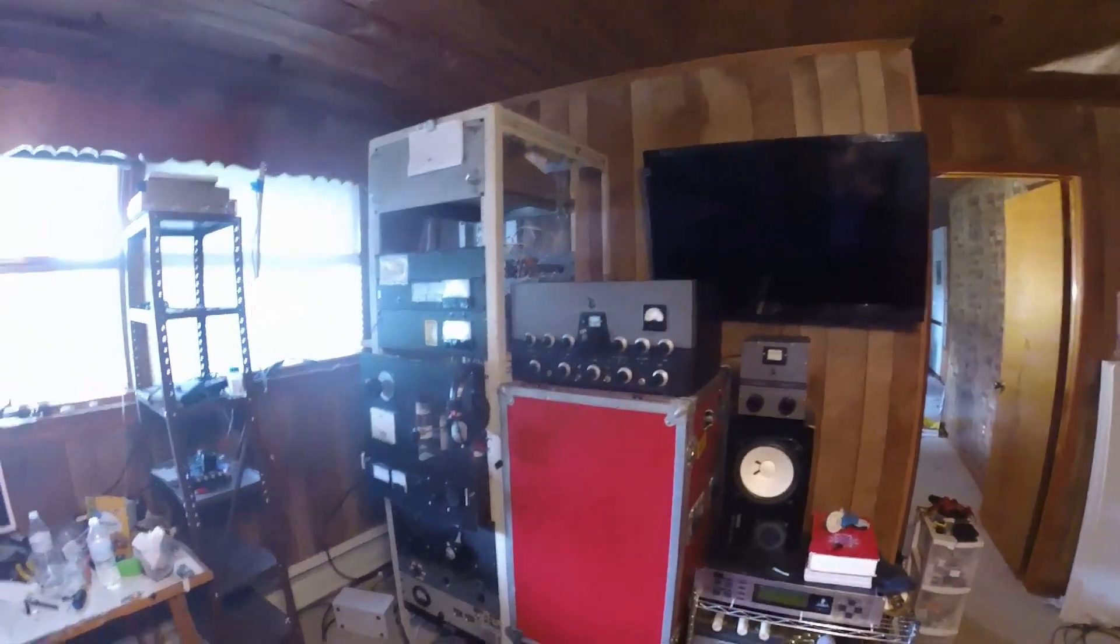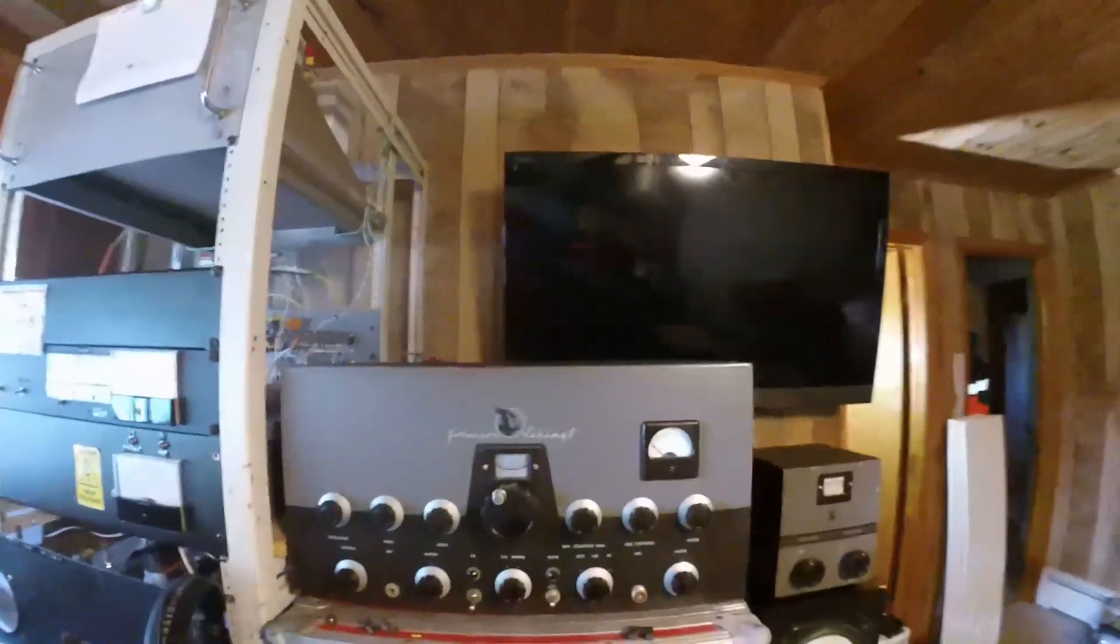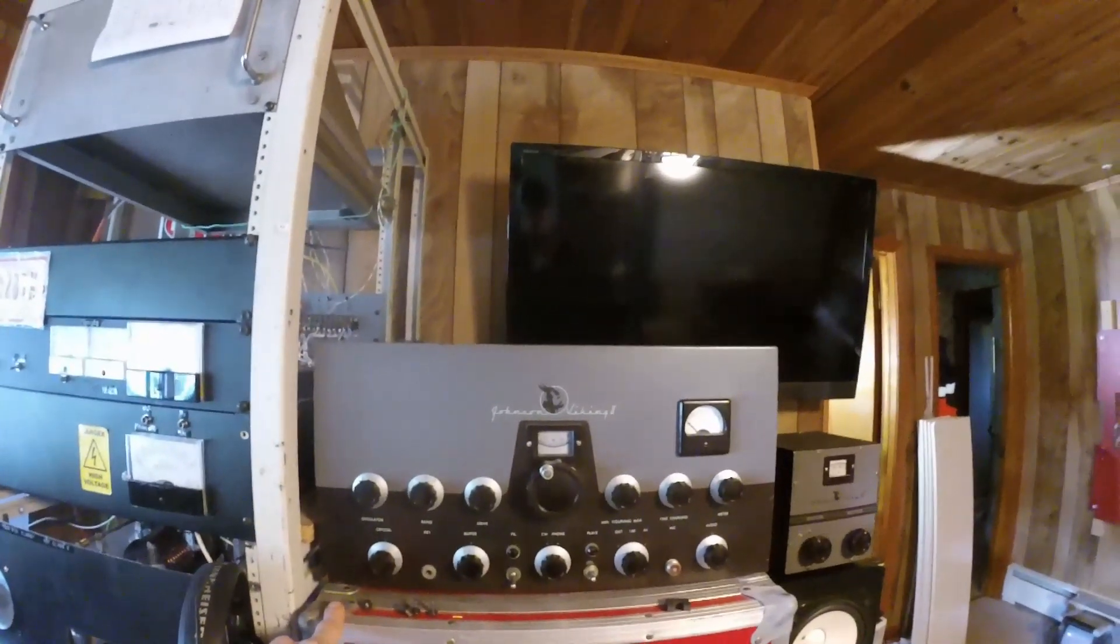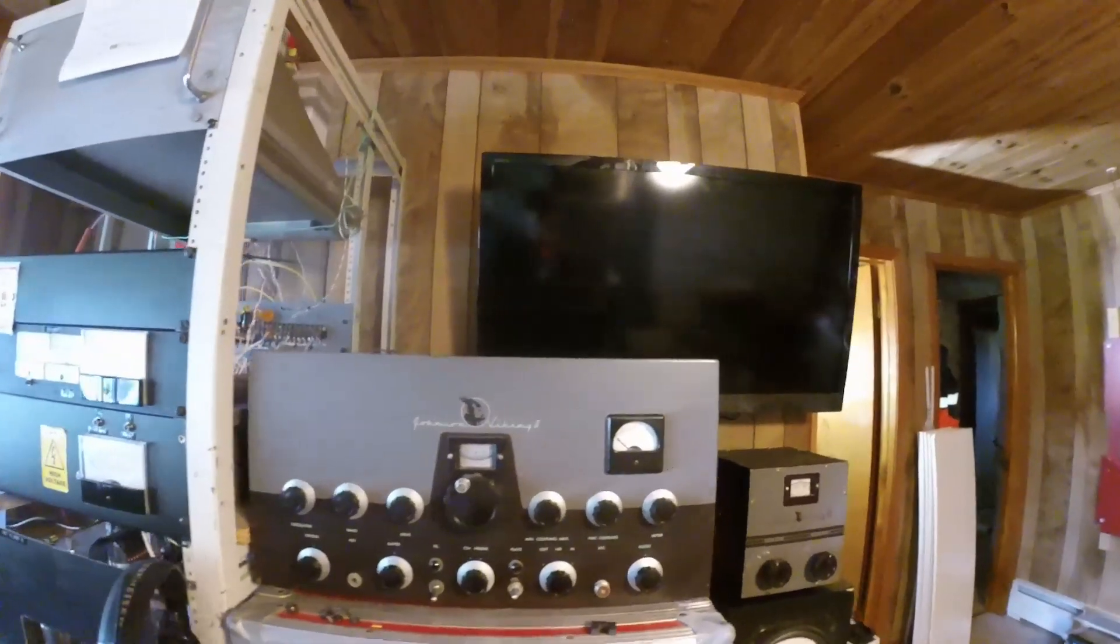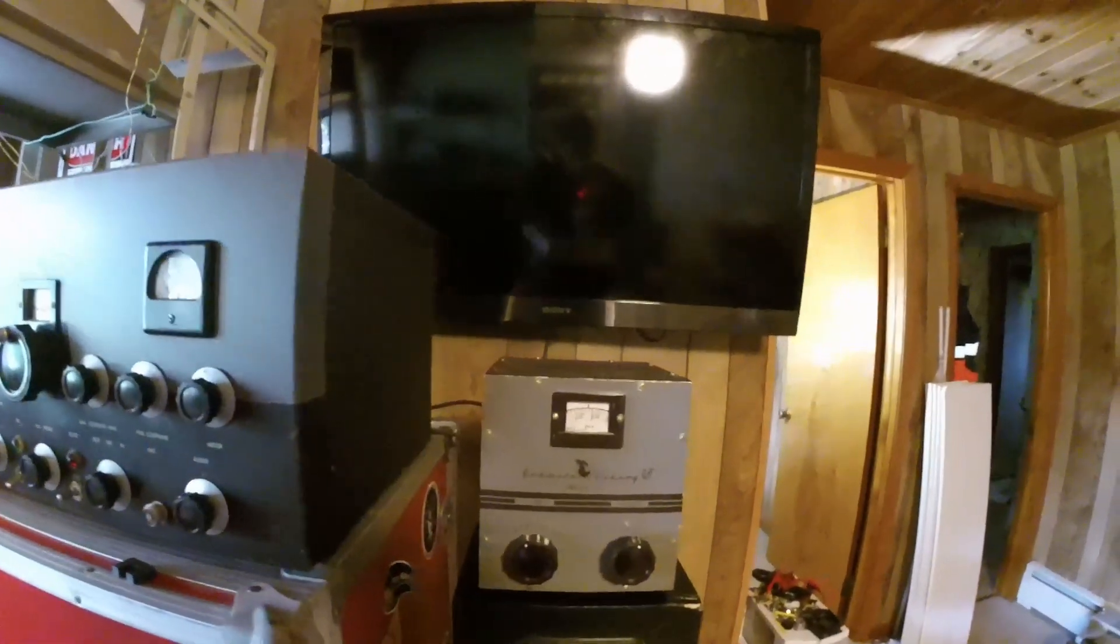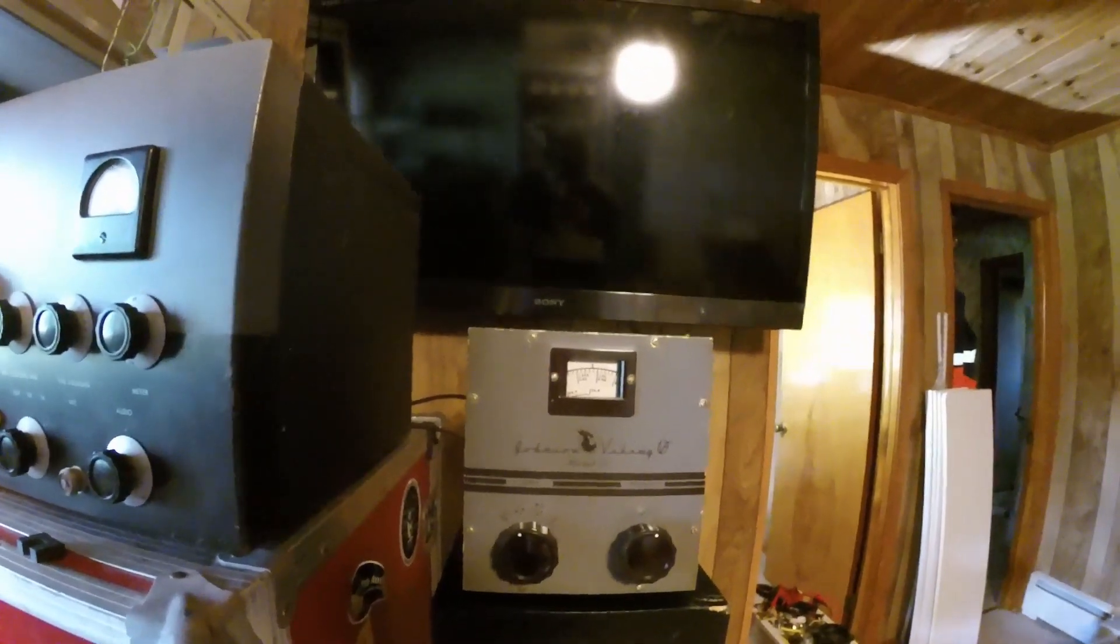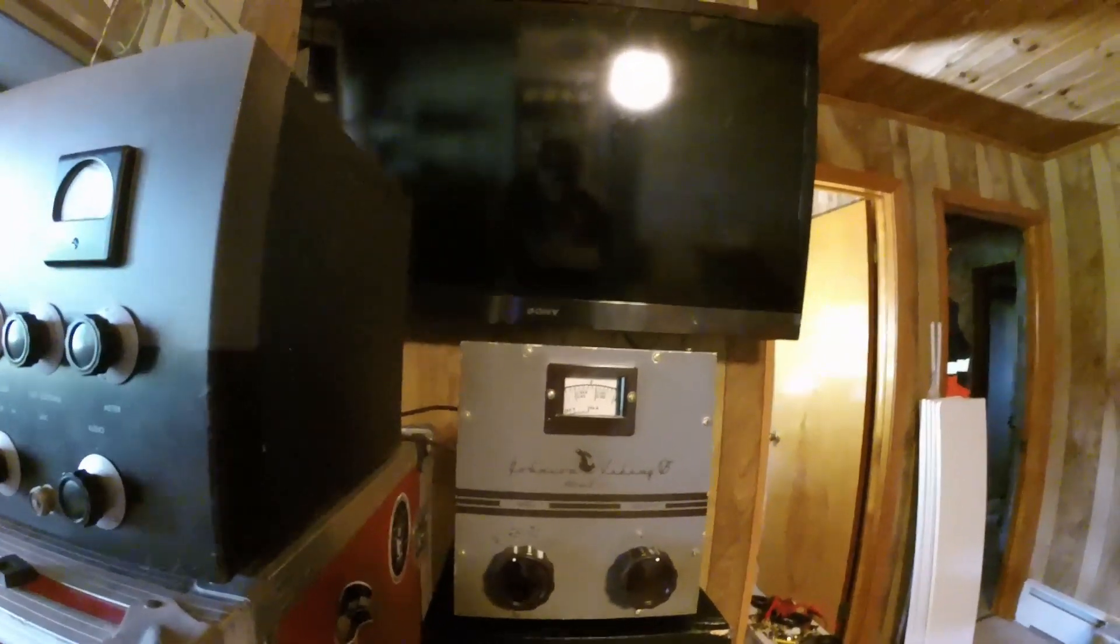So here we are in the transmitter room, the business end of things. I haven't showed you guys this yet, so this will be pretty cool. Here we have our exciter, the Johnson Viking 2. This is a 1950s commercially produced transmitter that I use every day. With that is our Johnson model 122 VFO.